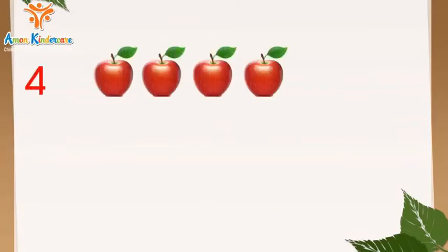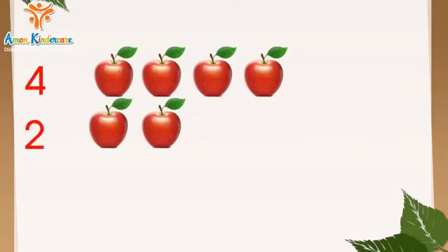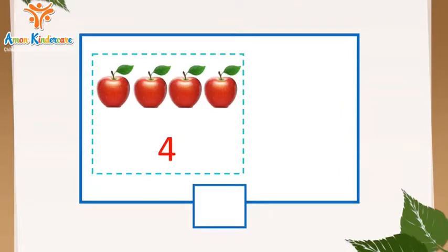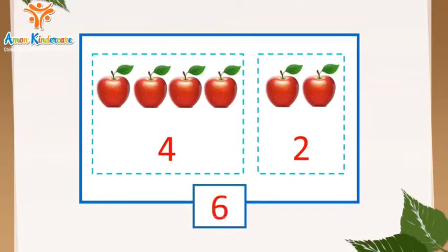Đây là 4 quả táo, thêm 2 quả táo nữa, bằng 6 quả táo. 4 thêm 2 bằng 6. Chúng mình cùng nhắc lại nào: 4 thêm 2 bằng 6.